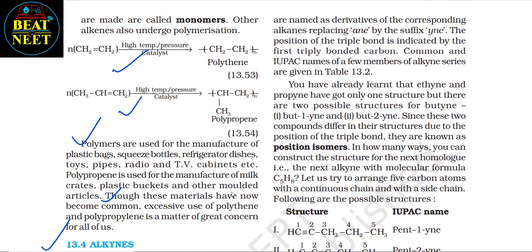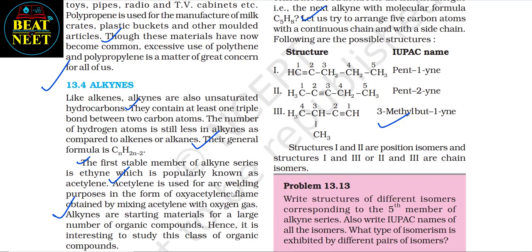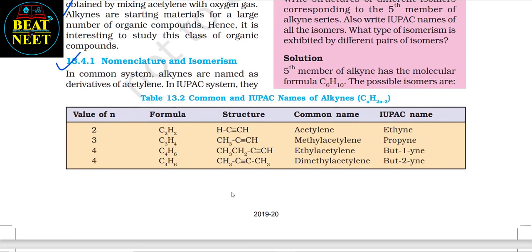13.4.1 Nomenclature and isomerism: in the common system, alkynes are named as derivatives of acetylene. In the IUPAC system, they are named as derivatives of the corresponding alkanes by replacing '-ane' with the suffix '-yne'. The position of the triple bond is indicated by the first triply bonded carbon. Ethyne and propyne have only one structure, but butyne has two possible structures — but-1-yne and but-2-yne — which are position isomers. For C₅H₈, there are structures with continuous chain and side chain giving position isomers and chain isomers.